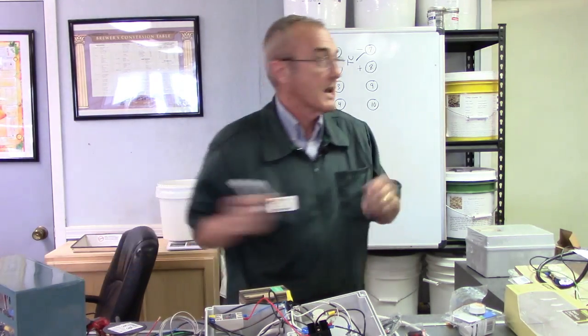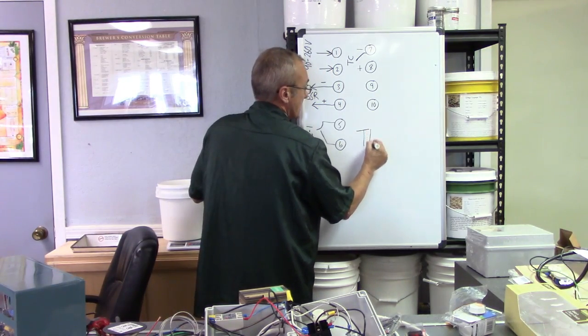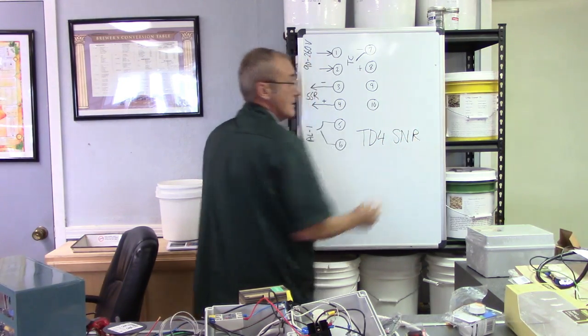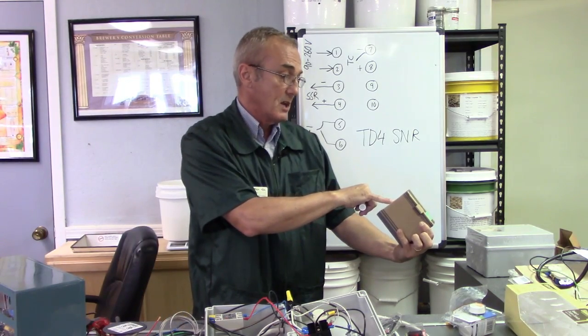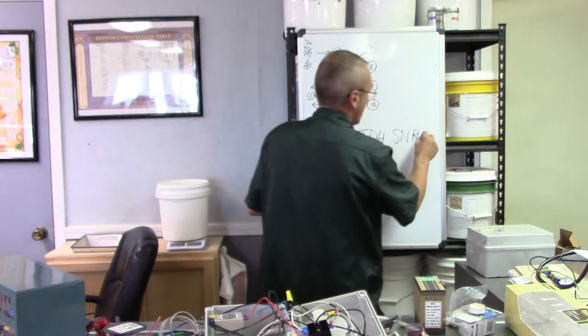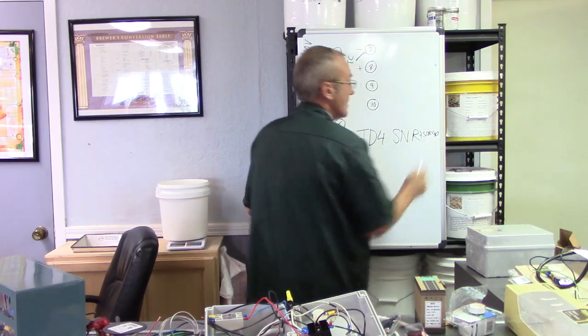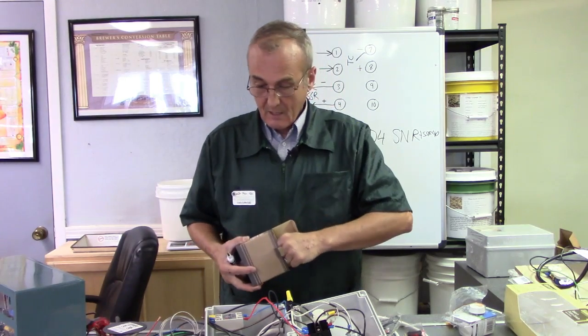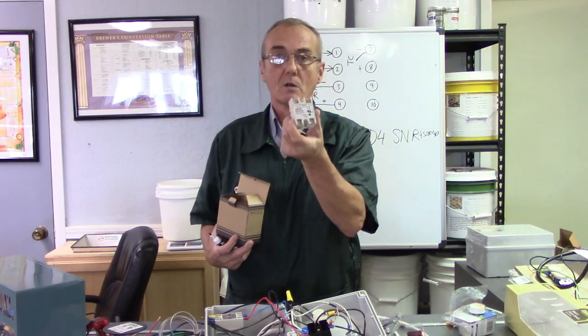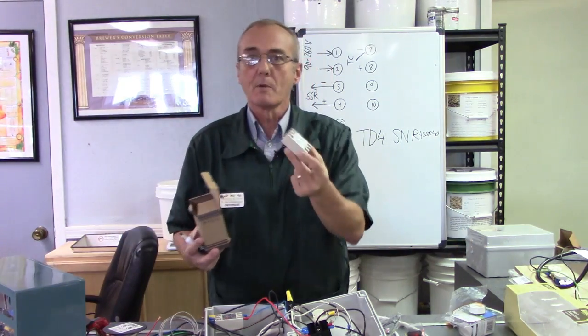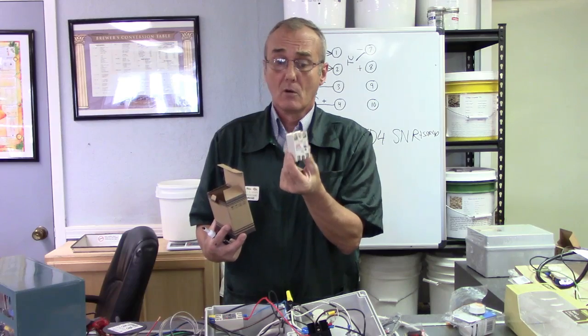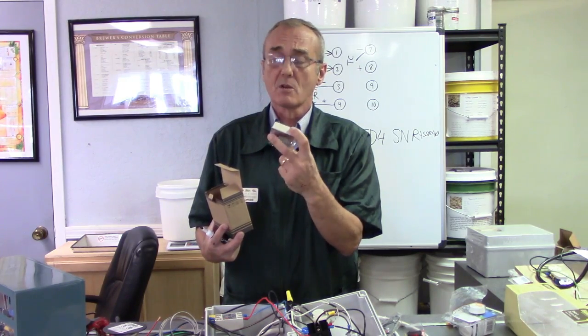So if you order one, make sure you order the one that says TD4SNR. That should be written right on the side of the box, TD4 model TD4SNR. And this one will say plus SSR40, which is a solid state relay. That's the separate relay that they send you, that comes with it. Some will come with it, some will come without it, and you have to order it separate. Just make sure you get at least a 25. This is a 40, so this will definitely handle what we're trying to do. But up to a 25 is about as low as you want to go.